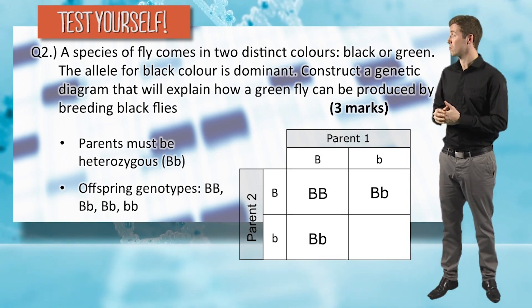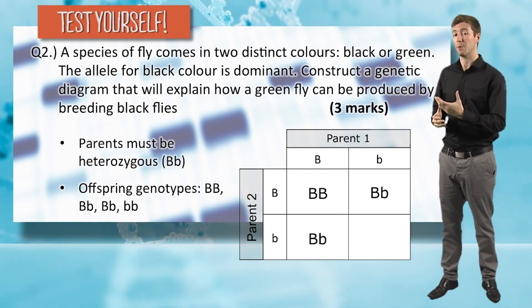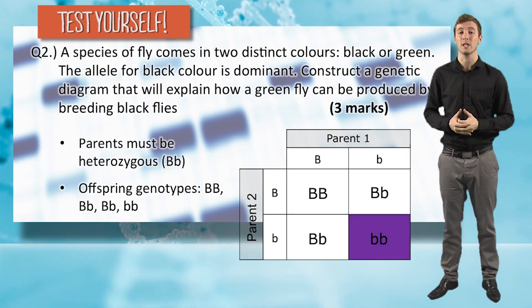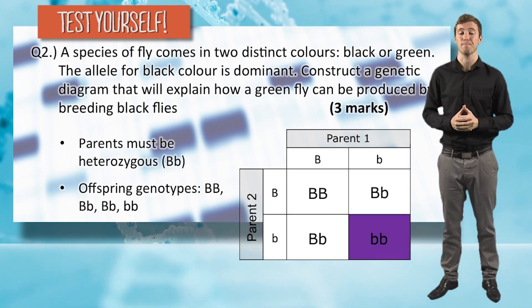Two offspring that were heterozygous with a capital B and a lowercase b, and finally one that contained two lowercase, or recessive, b's.